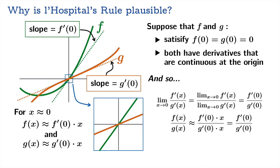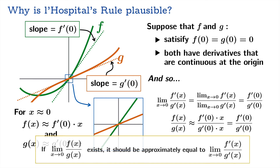We haven't really proven anything. All we've shown is that if the limit of the ratio of the original functions exists, it should at least be approximately equal to the limiting value of the ratio of the derivatives. This is not a proof at all, but hopefully you can see why the limiting value of the original ratio of functions has some relationship to the limiting value of the ratio of the corresponding derivatives.